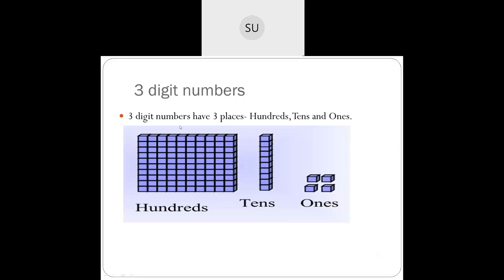And here we have a strip of 100. In 100 strips, how many ones will you have? You will have 100 ones, or you will have 10 tens. So 10 tens make 1 hundred. So you have 100 plus 1 ten plus 4 ones, which gives you the number 114.